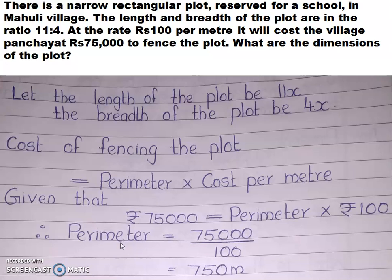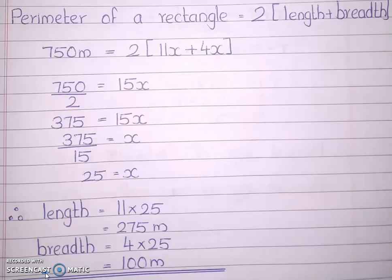So 75,000 divided by 100 will give you the perimeter of this plot. These two zeros get cancelled, so the perimeter is 750 meters. You got the perimeter of the rectangular plot is equal to 750 meters. Now the formula you should know is: perimeter of a rectangle equals 2 into (length plus breadth). We are going to substitute whatever we know. Perimeter is equal to 750 meters, so 2 into (11x plus 4x).